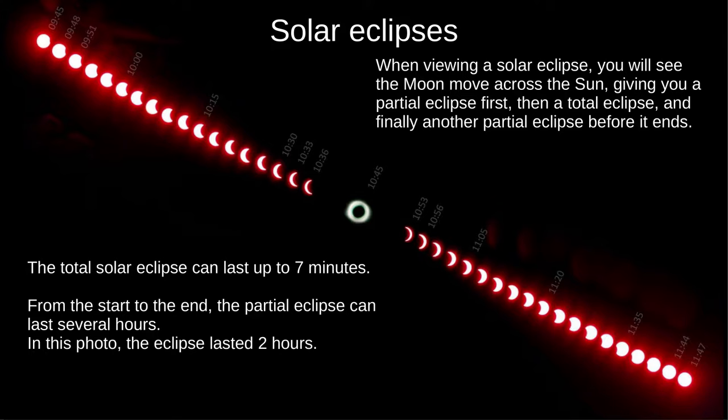Here we can see the progression of a solar eclipse over time. From left to right, we see an increasing partial eclipse, then the total eclipse, then a decreasing partial eclipse. A total eclipse can last up to 7 minutes. From the very start to the very end, the eclipse lasts a few hours.